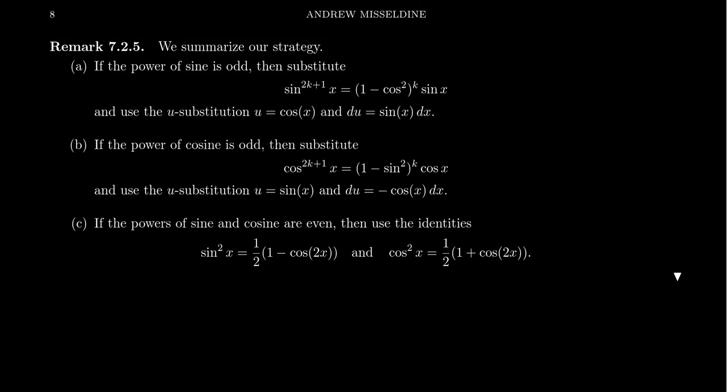So I want to do a short recap of what we have seen so far with these trigonometric integrals. If we have an integral that only involves sines and cosines, so we have some integral sine to the a of x times cosine to the b of x dx.